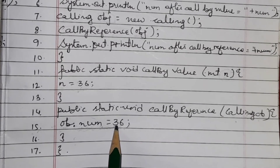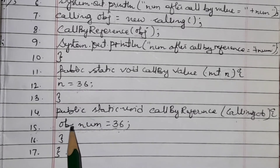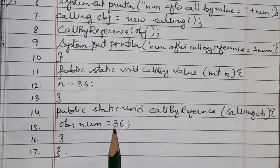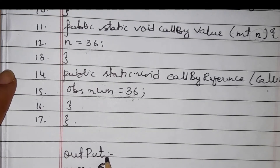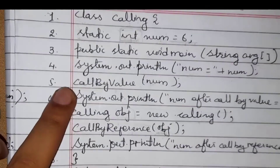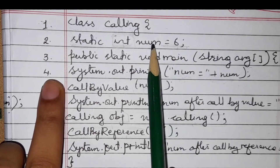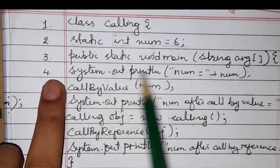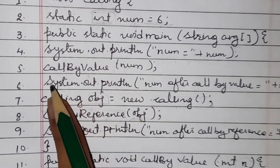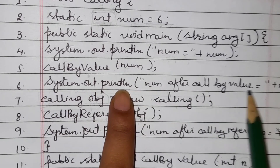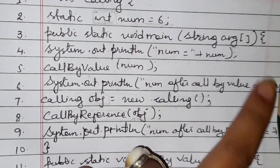Now let's look at the output. First, 'num = 6' — from line 4, 'System.out.println("num = " + num)', this prints 6. Second output is 'num after callByValue' — look at line 6, even after call by value, the actual value of 'num' remains the same. It is unchanged.